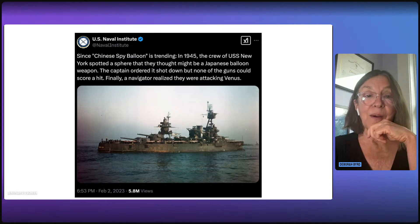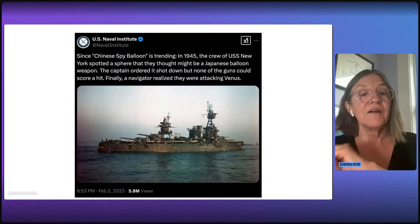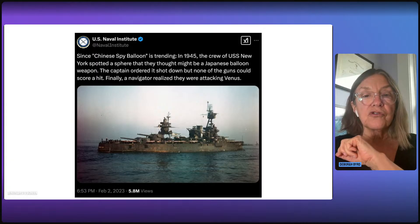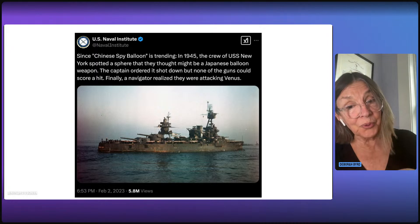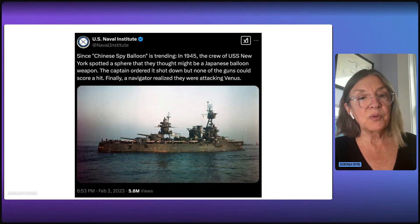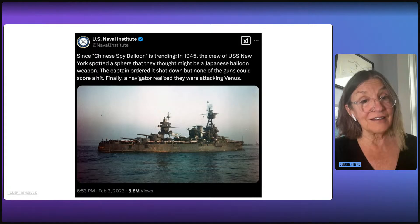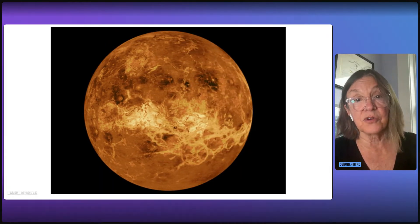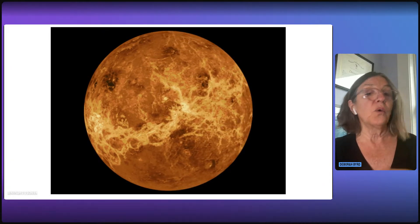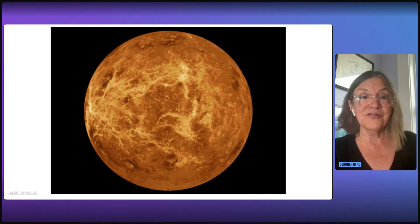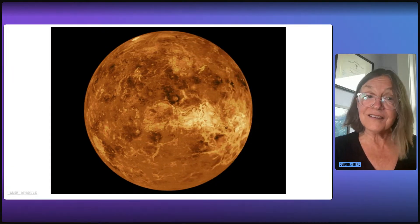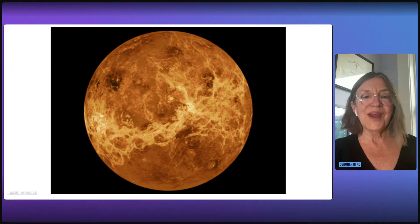Venus has often been mistaken for something scary in the night sky, not just in our time. But in 1945, the crew of the USS New York was ordered to shoot down an object that they thought might be a balloon carrying an enemy weapon. But in fact, they were shooting at Venus. And there are many other stories like that too, in the history of science, going back even into the 19th century and even farther back, people mistaking Venus for something dangerous or strange.